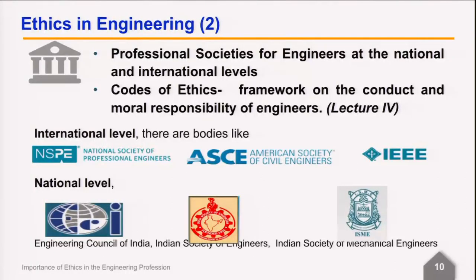We will look at codes of ethics in detail in the next lecture. To give some examples of professional societies at the international level, there are bodies like the National Society of Professional Engineers (NSPE), the American Society of Civil Engineers, and the Institute of Electrical and Electronics Engineers. At the national level, there are bodies like the Engineering Council of India and the Indian Society of Engineers, and so on. India is also catching up in having standards and codes.